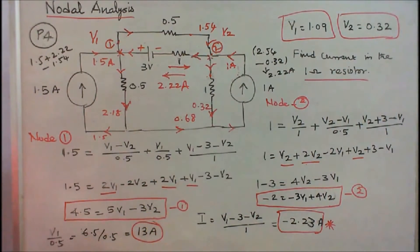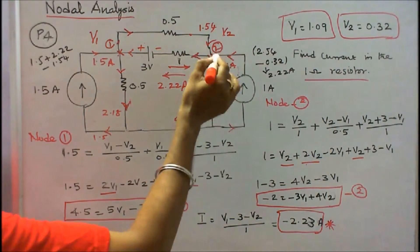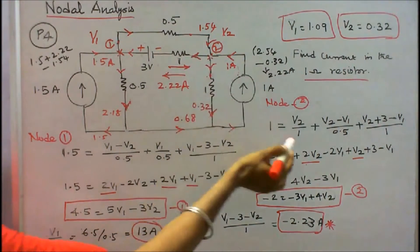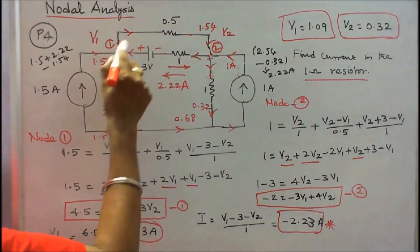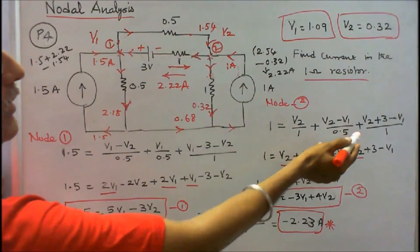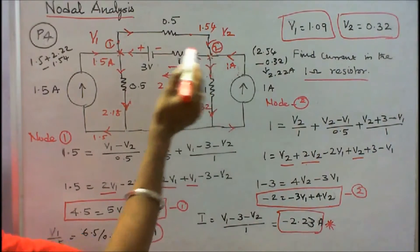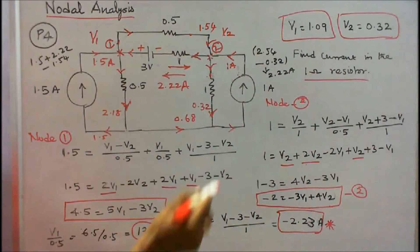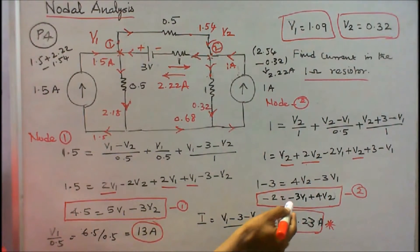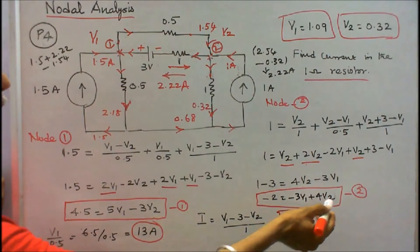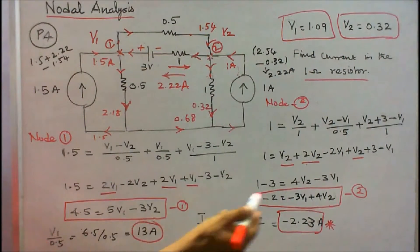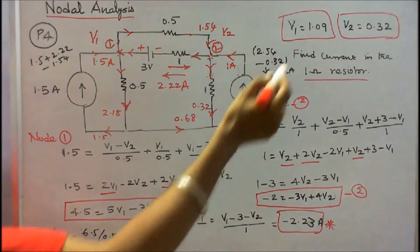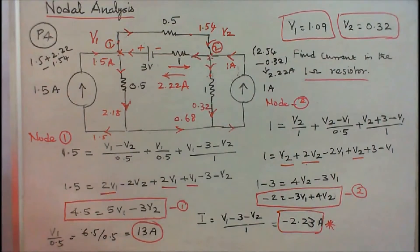At node 2: 1 equals V2 by 1, plus (V2 minus V1) divided by 0.5, plus (V2 plus 3 minus V1) divided by 1. Simplifying gives: minus 2 equals minus 3 V1 plus 4 V2. Solving the two equations gives V1 equal to 1.09 volts and V2 equal to 0.32 volts.